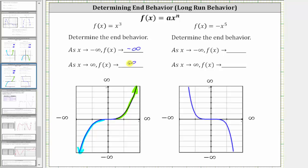Now let's look at f(x) = -x⁵. As x approaches negative infinity, or as we move to the left, the graph goes up, and therefore the y values approach positive infinity. As x approaches positive infinity, or as we move to the right along the graph, the graph goes down, and therefore f(x) approaches negative infinity.